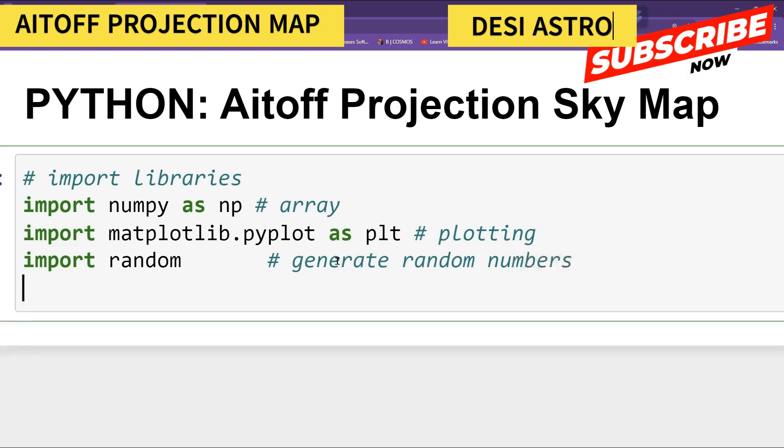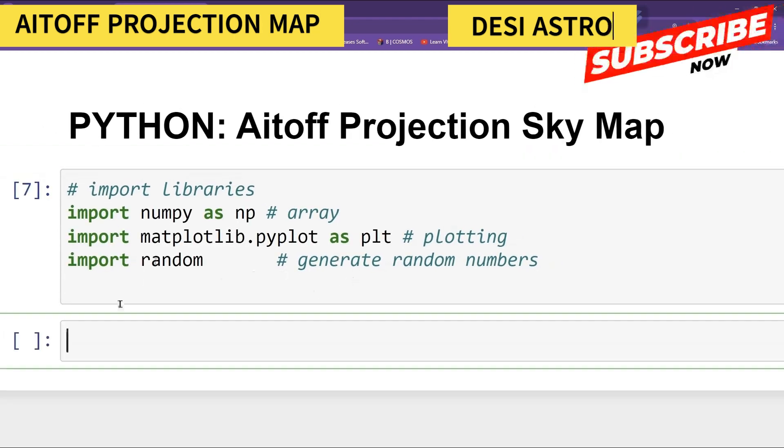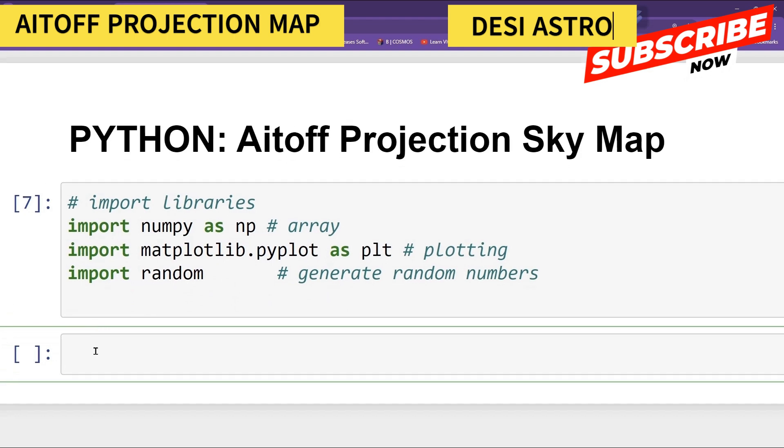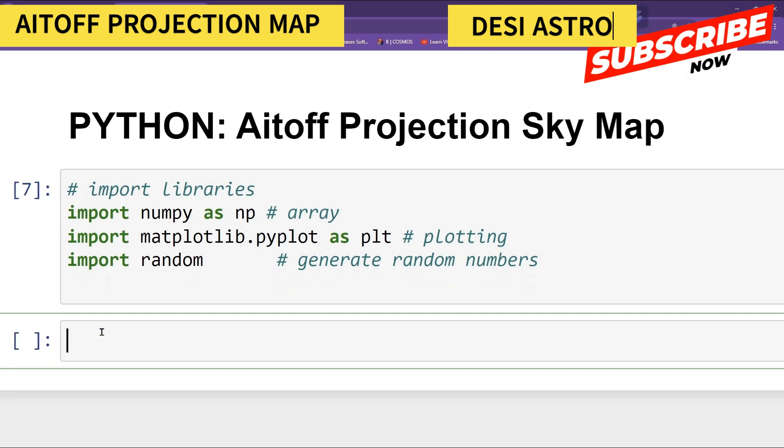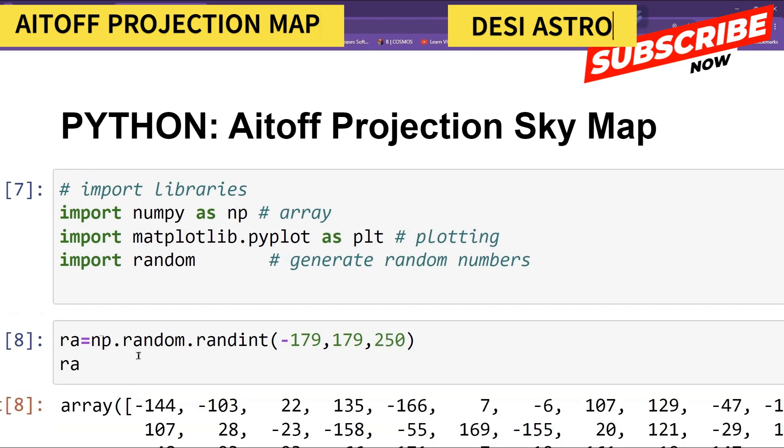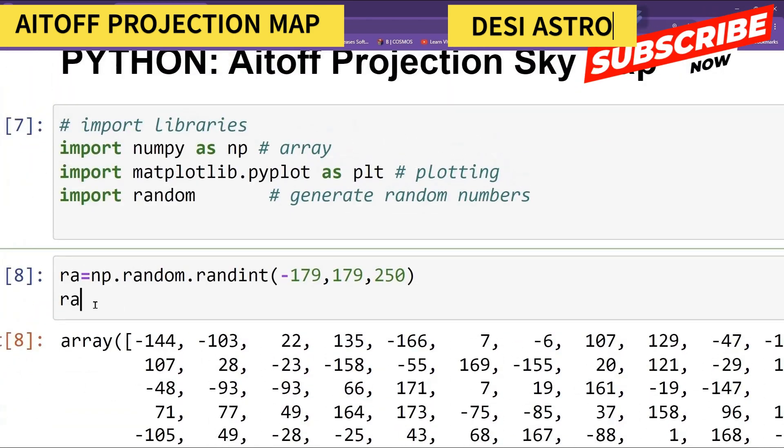Now I will define RA and DEC for plotting Aitoff projection in the sky map. So I will define here RA equal to np.random.randint. And suppose I want to give my RA from minus 179 to 179. RA goes from minus 180 to 180, right? And suppose I want to give 250 data points. So you can see your RA is random integers in that range, and it is 250.